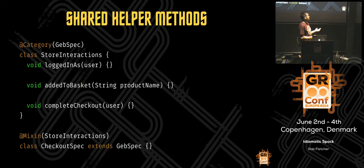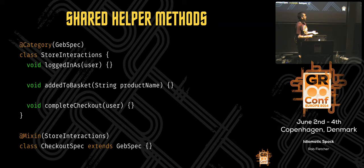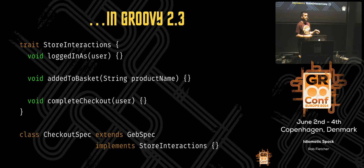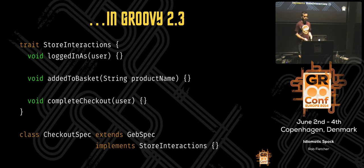A nice way to share helper methods between multiple specs is to define a category that applies to a specification — for example, one that applies to a Geb spec — and define your methods there. You can then mix them into your specification class, making all those helper methods and objects available. In Groovy 2.3 you can use traits. You can't yet have feature methods that execute tests in a trait, but you can have all your helpers and objects there. You can then implement that trait in your specification class — it's a great way to share stuff between tests.